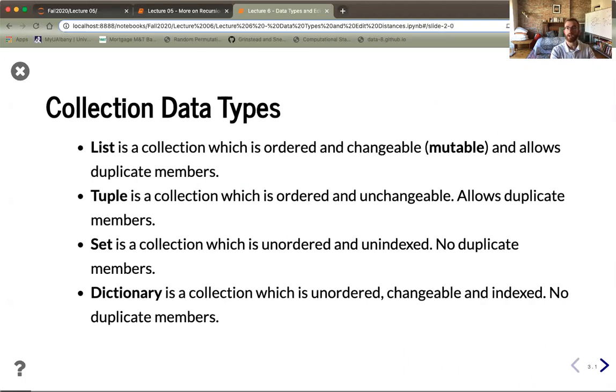We've already considered lists. A list is a collection of objects, strings or integers, and they don't even have to be of the same type. One property is that it has to be ordered and changeable, sometimes also called mutable. You can also have duplicate members.